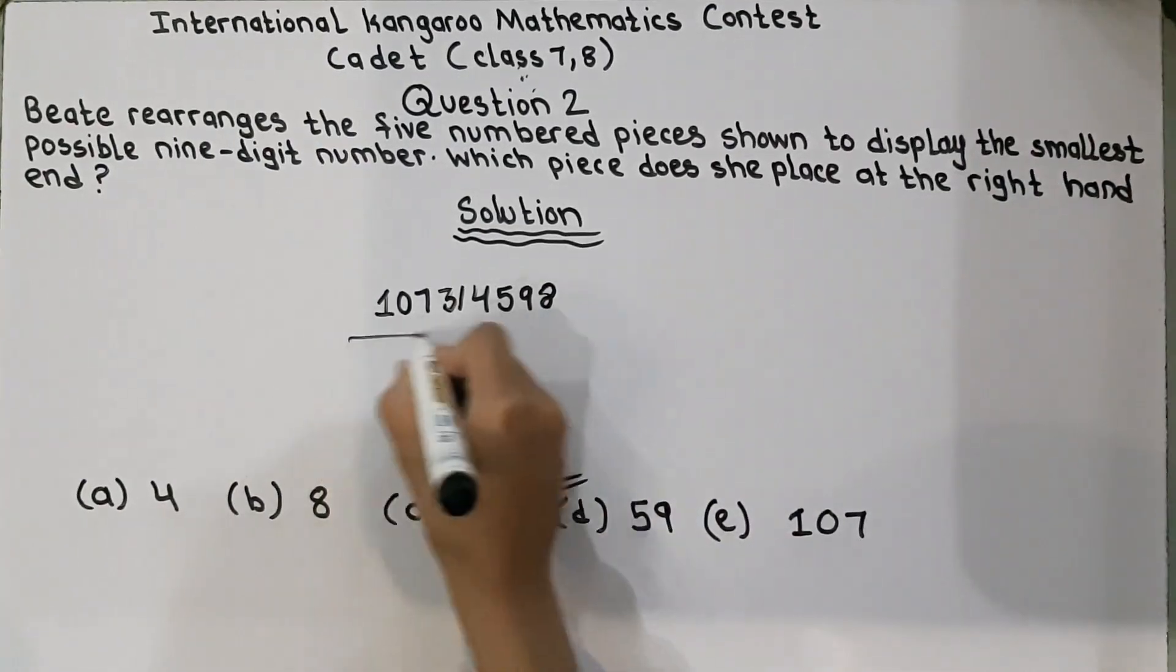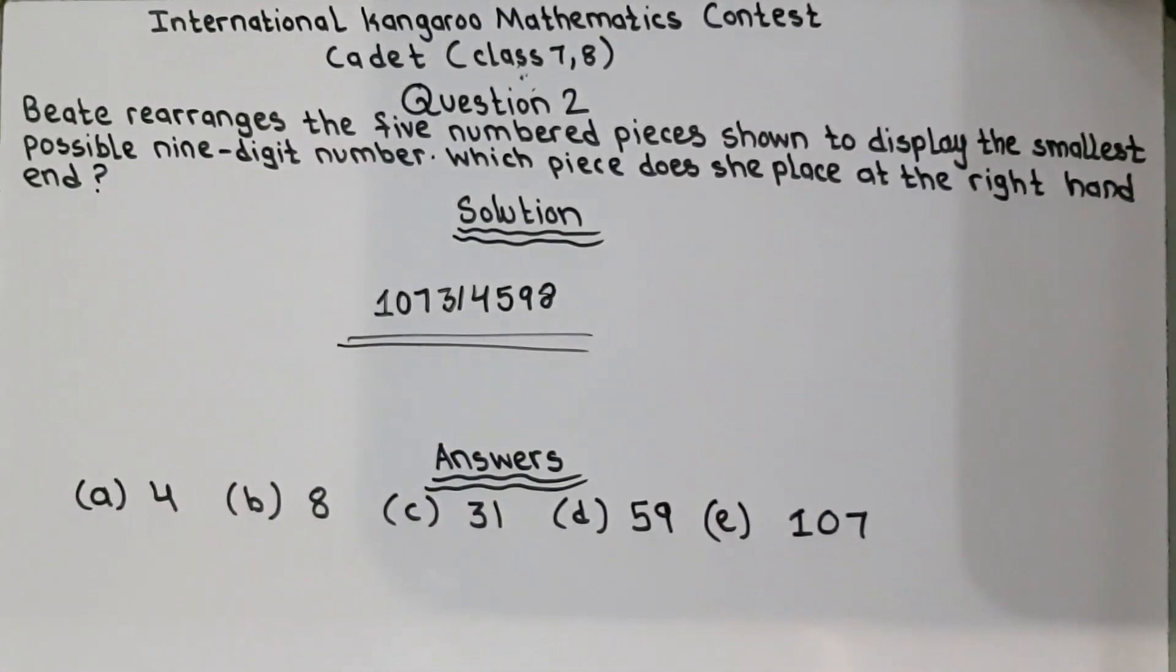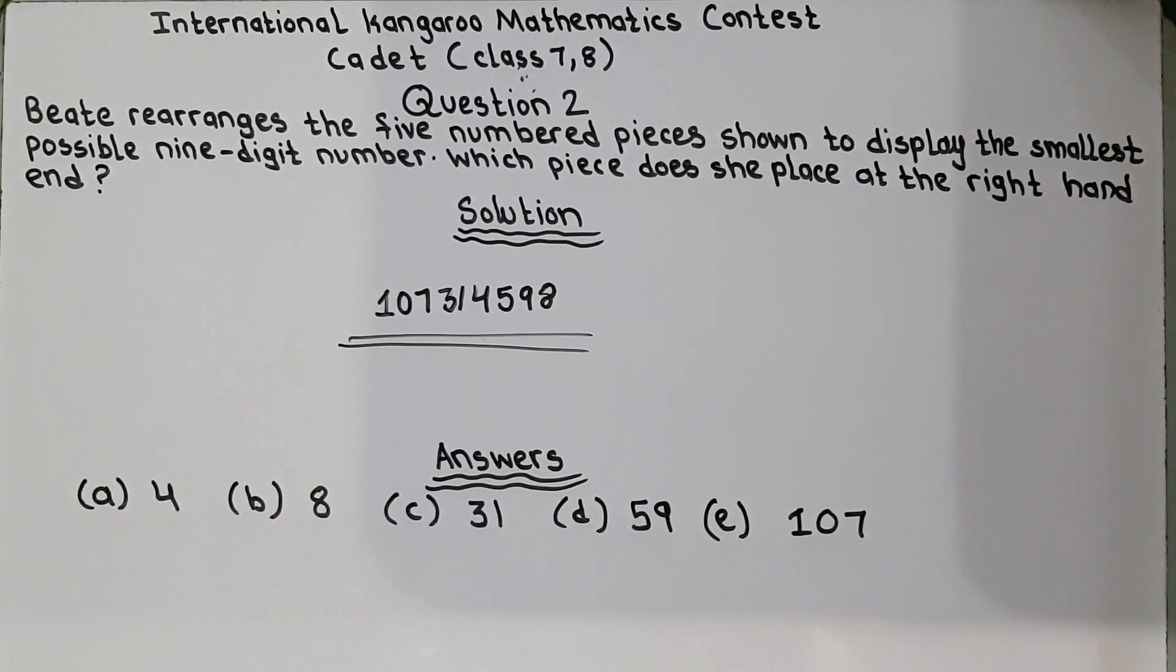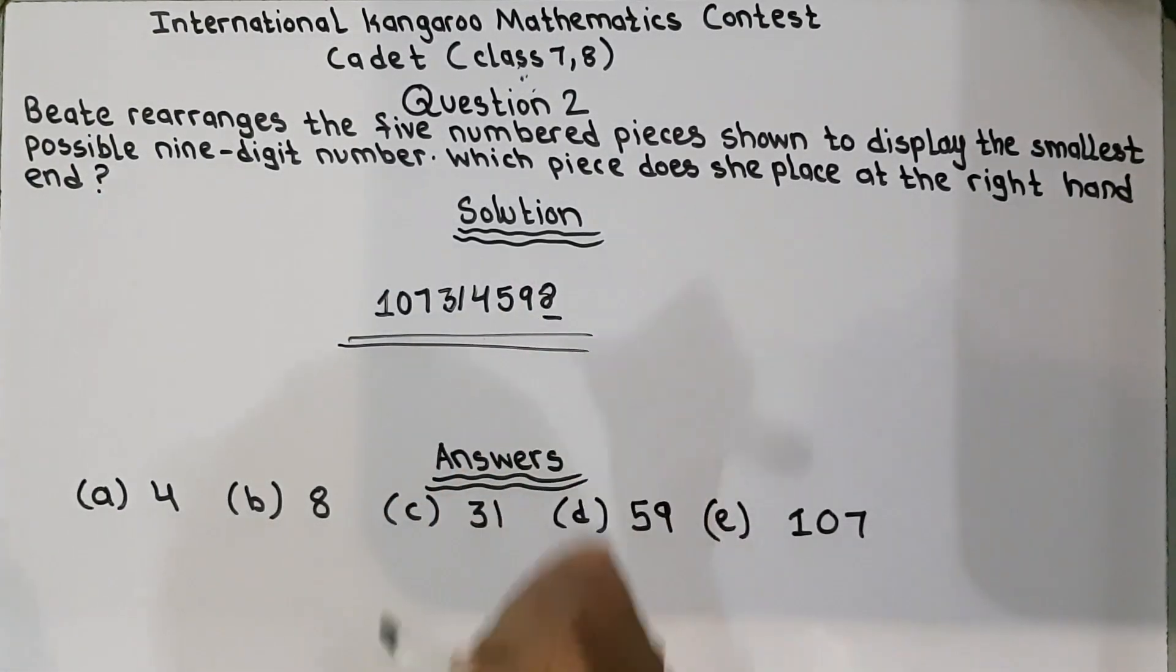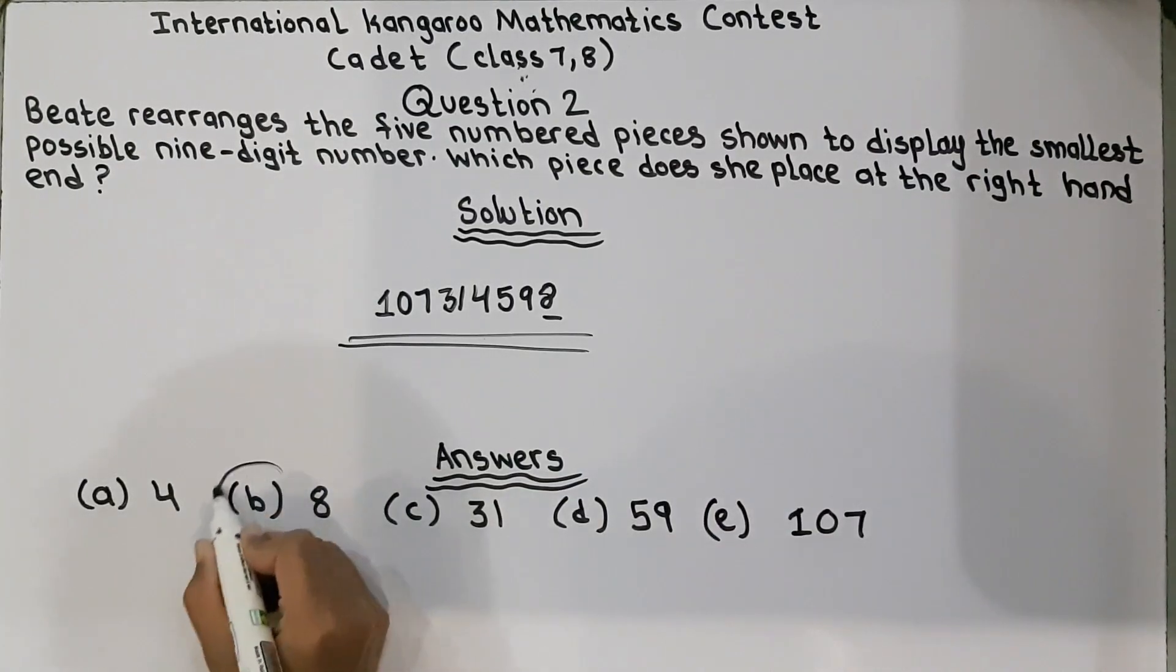So this number is the smallest 9-digit number, and at the right hand end, the number that came is 8. 8, and this is option number B, so we will circle it and the answer is 8. And the question is solved. It was a very easy one. I hope you can understand it by yourself or I have solved it for you.